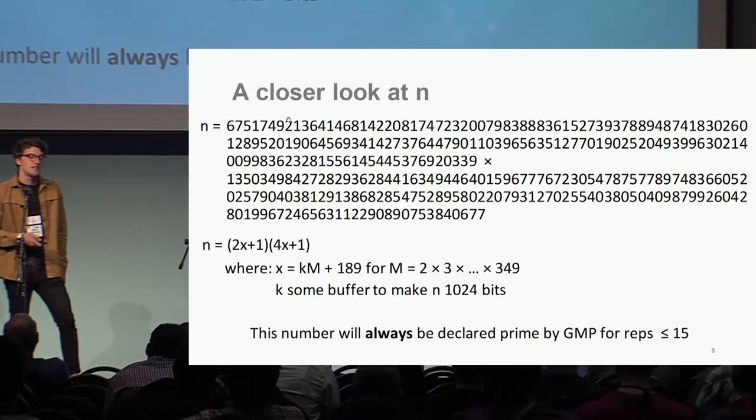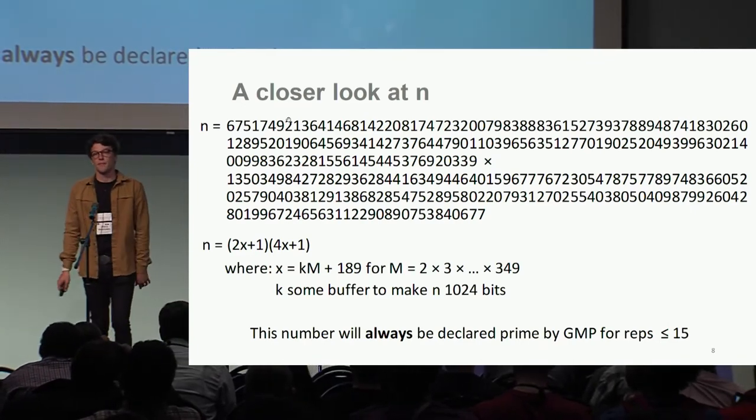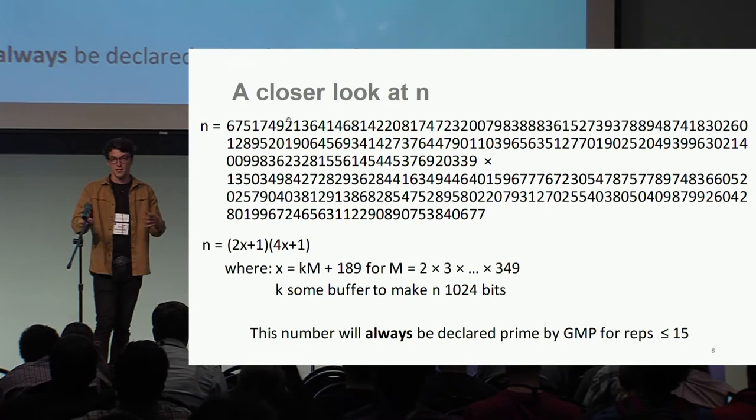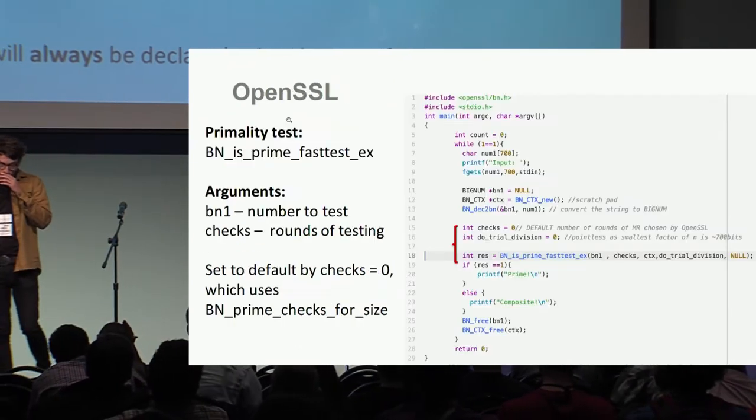What's interesting about this number is that this result is actually deterministic within GMP, so this number will always be declared prime by GMP when using this amount of reps, less than or equal to 15, the minimum recommended.